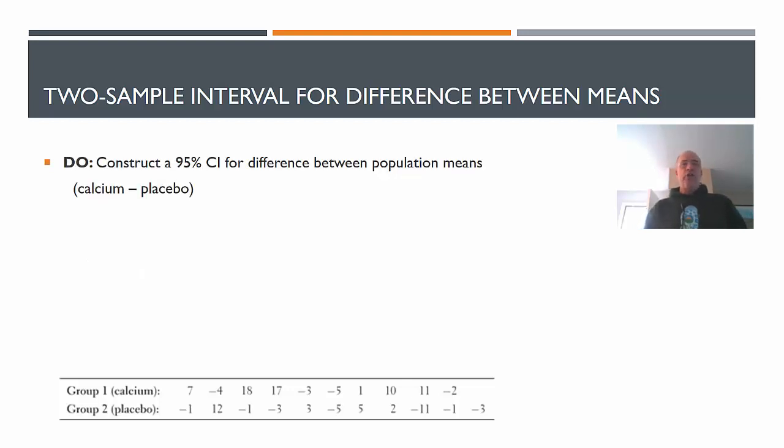So now we're going to dive into the do. We're going to construct the interval, construct a 95% confidence interval for the difference between population means. And important to note here, we're going to do it as calcium minus placebo. How much more of a difference do you get using calcium versus using placebo?